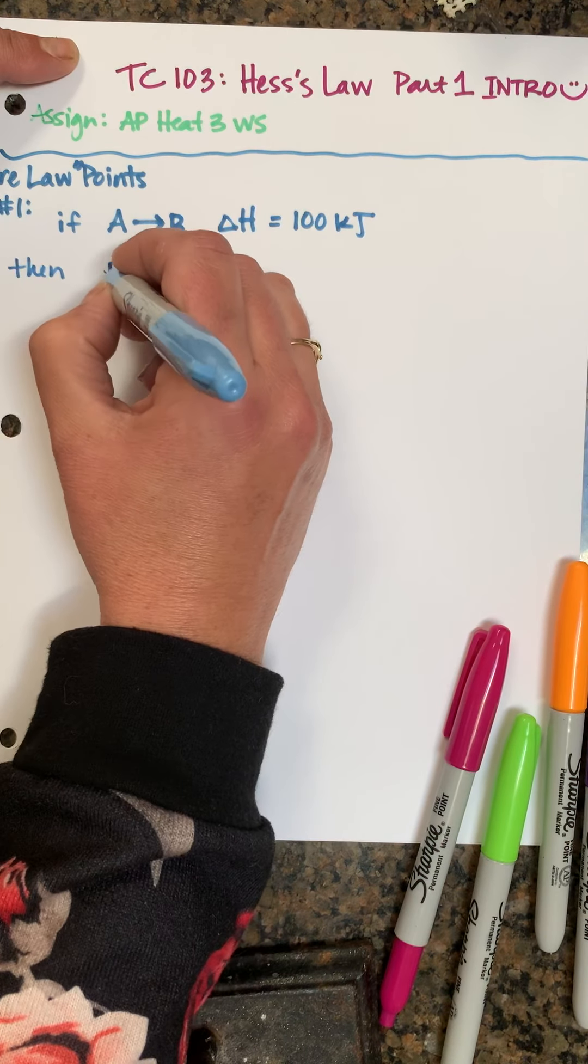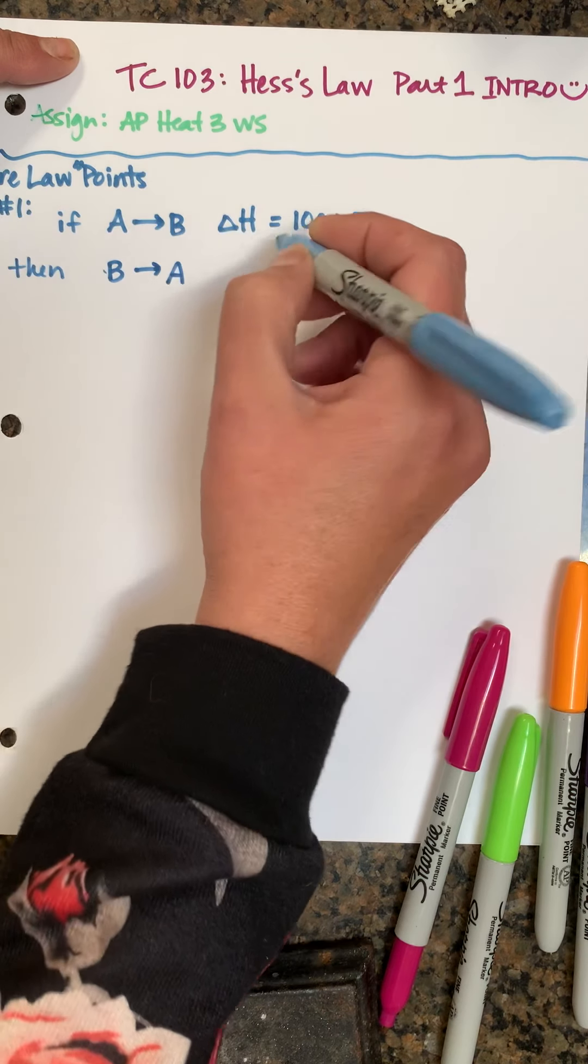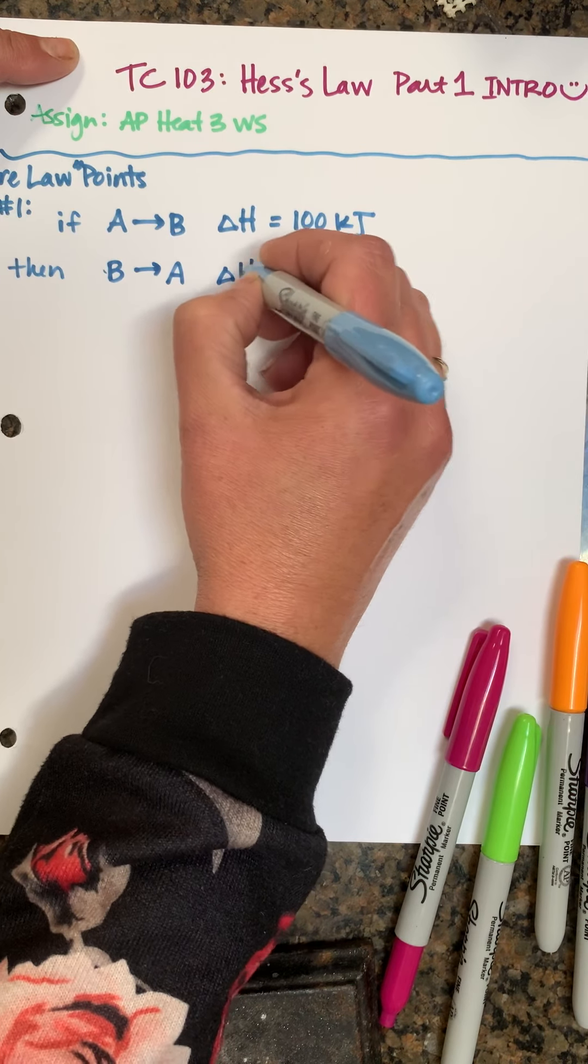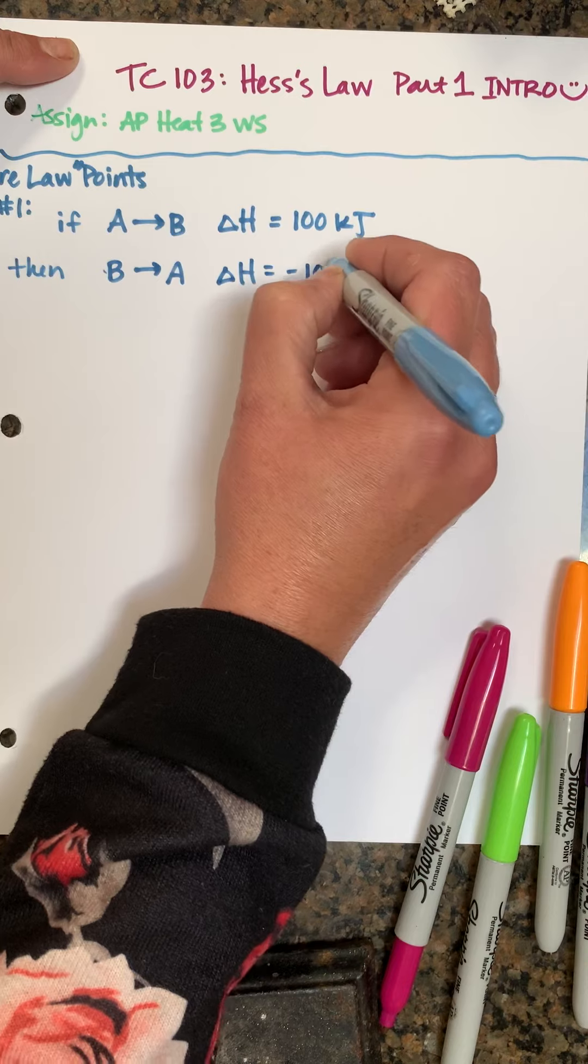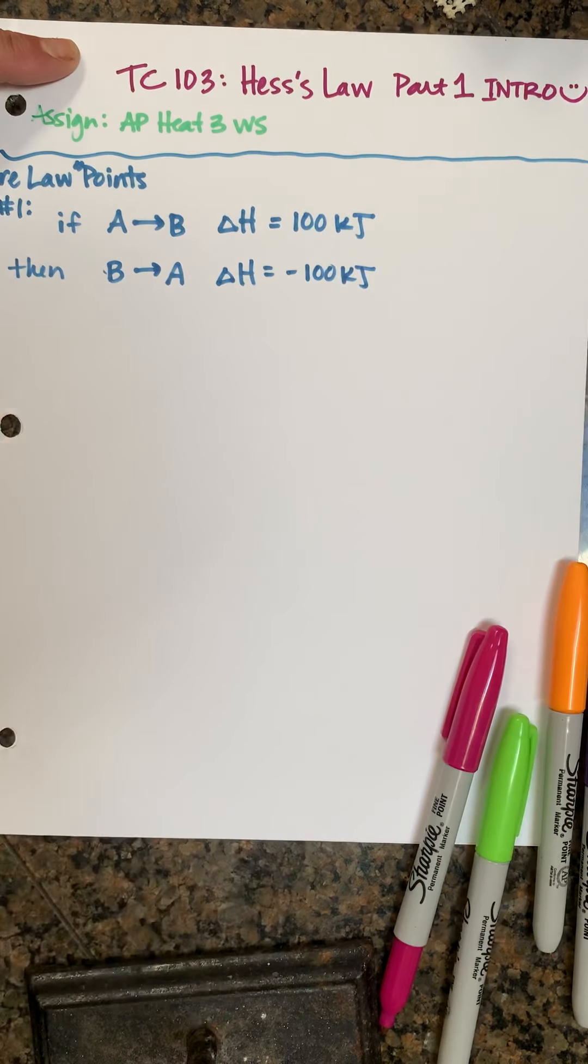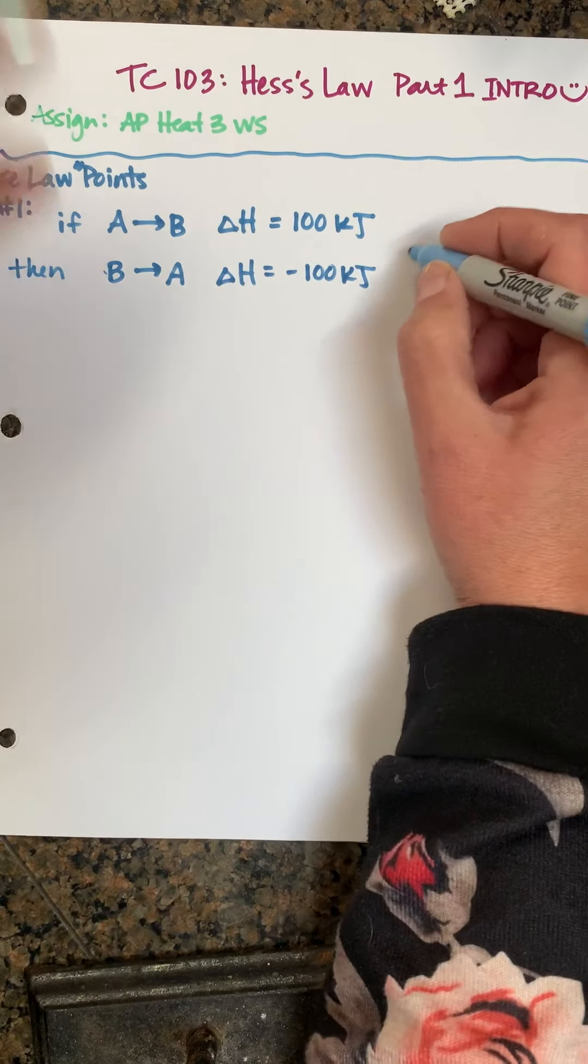We can say that B making A, the ΔH is equal to negative 100 kilojoules.